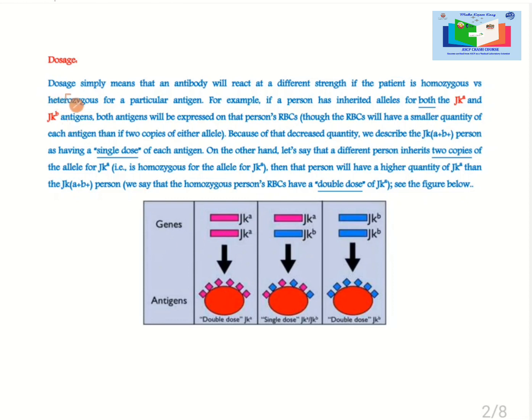Dosage simply means that an antibody will react at a different strength if the patient is homozygous versus heterozygous for a particular antigen. For example, if a person has inherited alleles for both the JKA and JKB antigens, both antigens will be expressed on the person's RBCs.